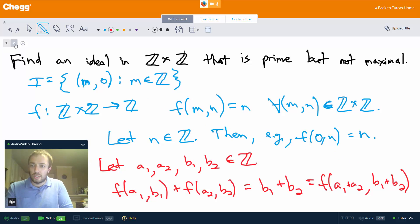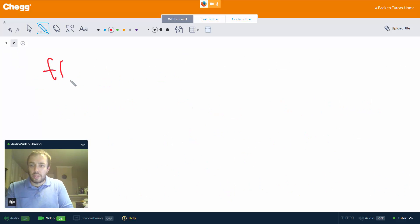Now we also have to check f(a₁,b₁) × f(a₂,b₂). And again, f(a₁,b₁) is just b₁ and f(a₂,b₂) is just b₂, so we have b₁ × b₂. And note that this is equal to f(a₁a₂, b₁b₂).